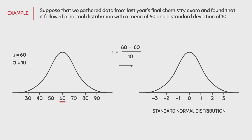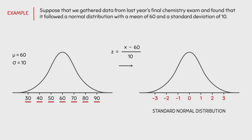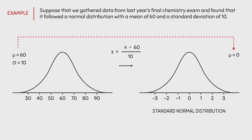To convert this distribution to the standard normal distribution, we will use the formula, where mu equals 60 and sigma equals 10. If I plug in 60, I get a value of 0. If I plug in 50, I get a value of negative 1. If I plug in 40, I get a value of negative 2. Doing this for each value, we end up with the same values as the standard normal distribution. The mean will always be converted to 0 and the standard deviation will always correspond to a value of 1, no matter what the original mu and sigma are.